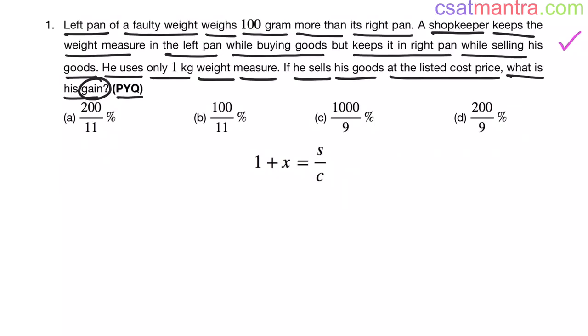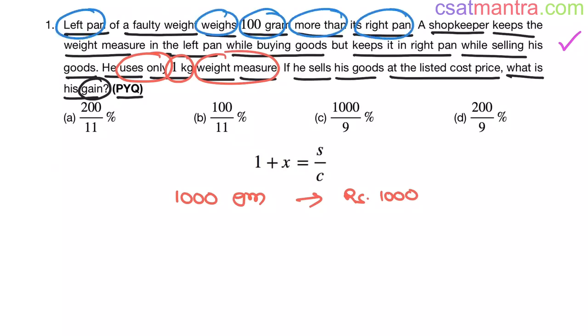See, it is given that shopkeeper uses only 1kg weight measure. Say 1kg. 1kg is 1000 grams. 1000 grams costs 1000 rupees in the market. Now see here, left pan weighs 100 grams more than its right pan and shopkeeper keeps the weight measure in the left pan while buying goods. So he is buying here. From this sentence, we can find out cost value.